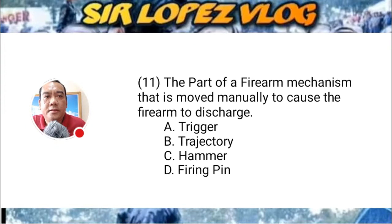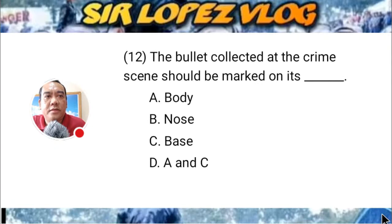Question number twelve: The bullet collected at the crime scene should be marked on each: A) body, B) nose, C) base, or D) A and C?